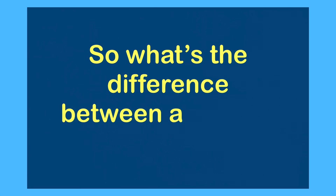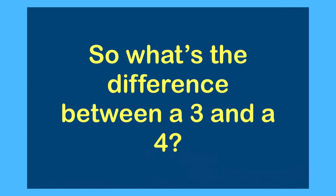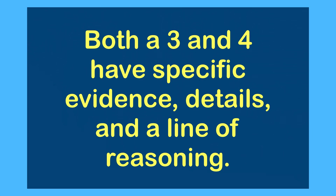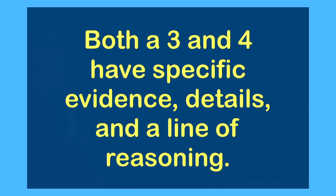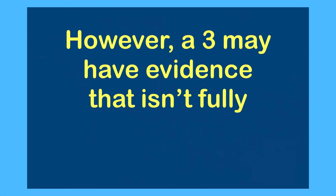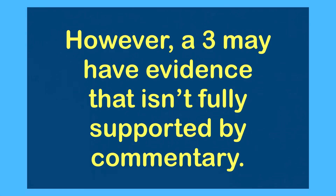What's the difference between a three out of four and a four out of four in Row B? I actually saw essays that got a two not because they didn't have good commentary — they actually did — but because they didn't have specific evidence. A three and a four both have specific evidence, detail, and a line of reasoning. Essays scoring a three tended to have inconsistent commentary — they might have evidence but not commentary to connect it back to the thesis. A four had very consistent evidence and commentary to support all claims. It was the level of execution and consistency.